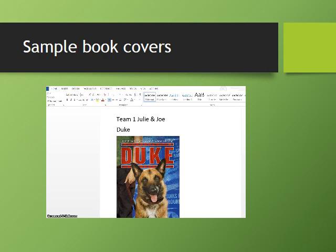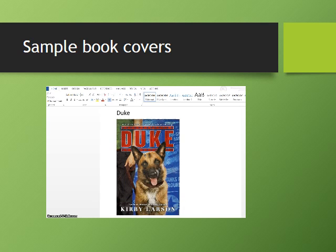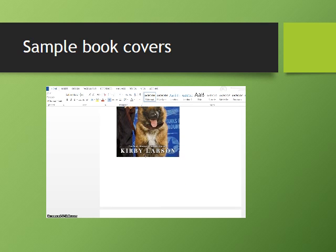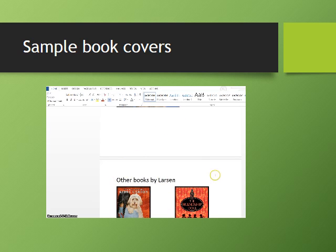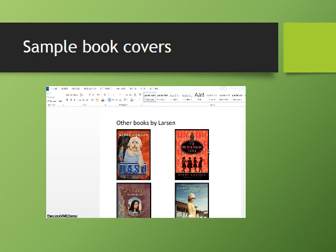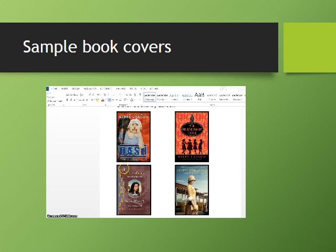So I'm Team One with Joe, and our book is Duke. You can see I have saved the cover of Duke. The second step was to find more books by that author, Kirby Larson. So I went on to OPAC, found more books, and I've typed in other books by Larson and placed them on this document and saved them there.